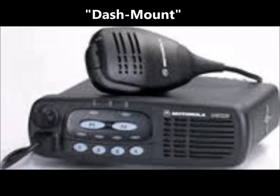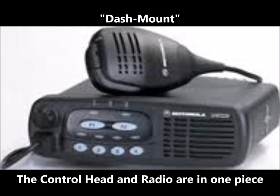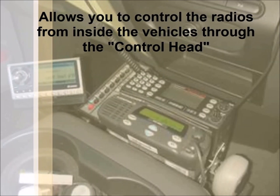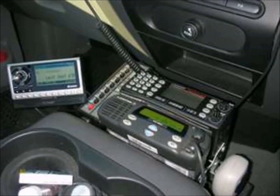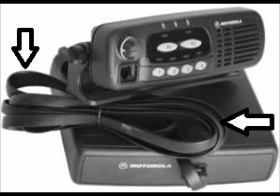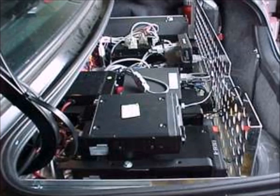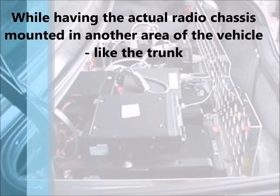Vehicle-mounted radios usually come in two different forms. A dash mount radio has the control head and microphone attached to the radio chassis, with minimal cabling requirements and a quicker install. Another choice is a remote mount radio, where the control head is located near the vehicle operator and the radio chassis is installed elsewhere in the vehicle, usually in a trunk or radio compartment, connected by a control cable.